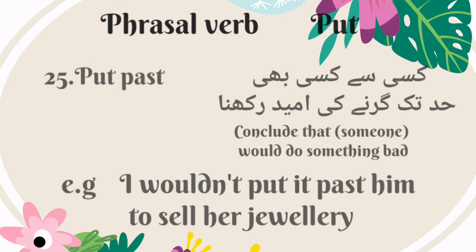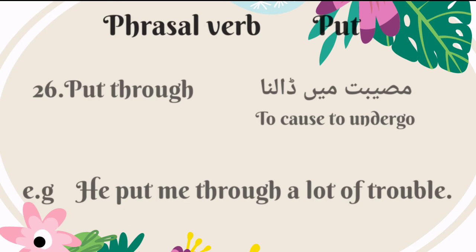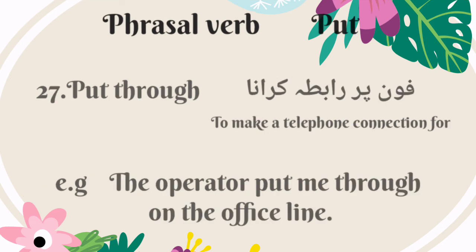The twenty-fifth phrasal verb is 'put past.' It means to conclude that someone would do something bad — Urdu mein is ka matlab hai kisi se kisi bhi hat tak girne ki umeed rakhana. For example: I wouldn't put it past him to sell her jewellery. The twenty-sixth phrasal verb is 'put through.' It means to cause to undergo — Urdu mein is ka matlab hai musibit mein dalna. For example: he put me through a lot of trouble. 'Put through' also means to make a telephone connection — Urdu mein is ka matlab hai phone per rapta karana. For example: the operator put me through on the office line.